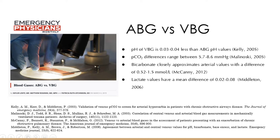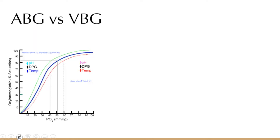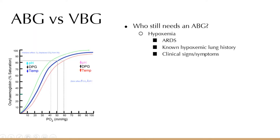Also consider patient satisfaction — one of the biggest complaints is how many times they get stuck. BBGs can actually be added to your chem panel since it's the same tube. That said, there are situations where an ABG is helpful: refractory hypoxemia, ARDS, clinical signs of hypoxemia, inability to get a good pulse ox reading, and suspected hypercapnia.